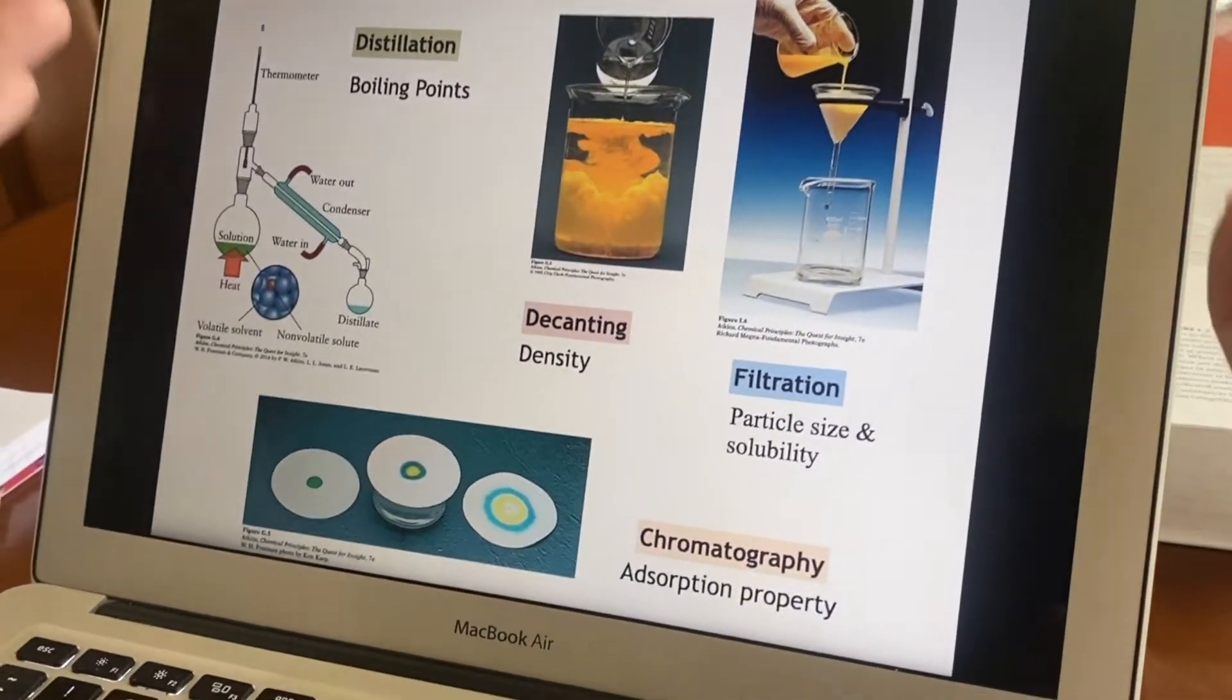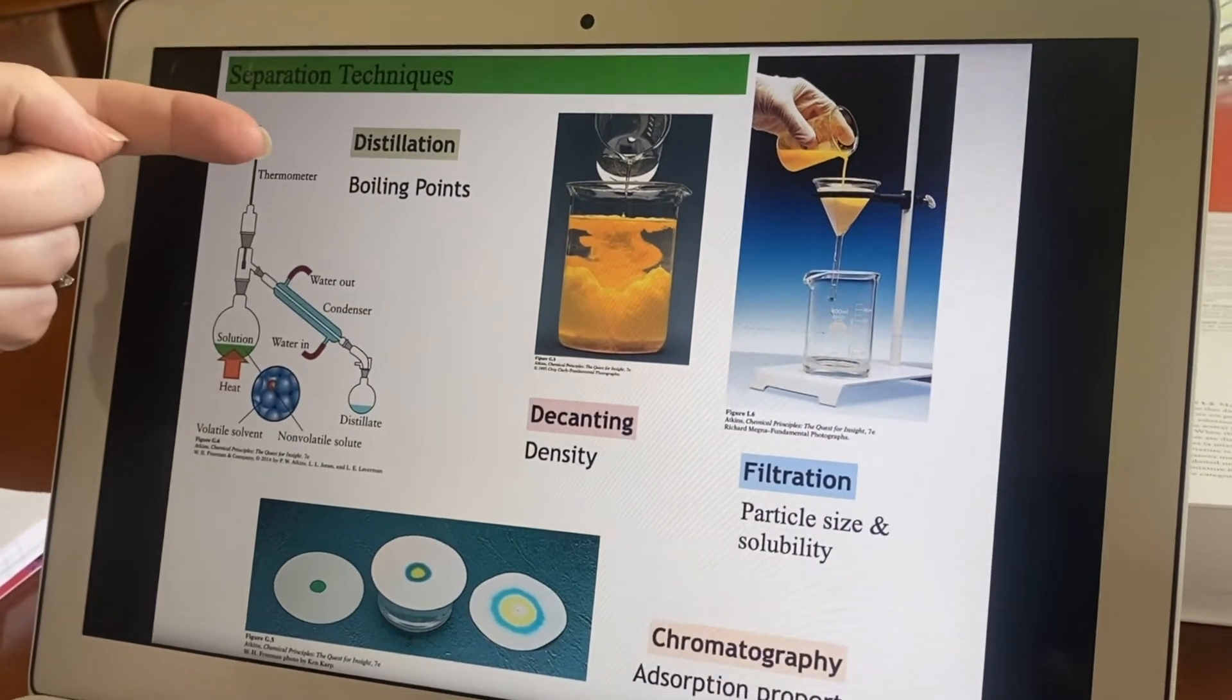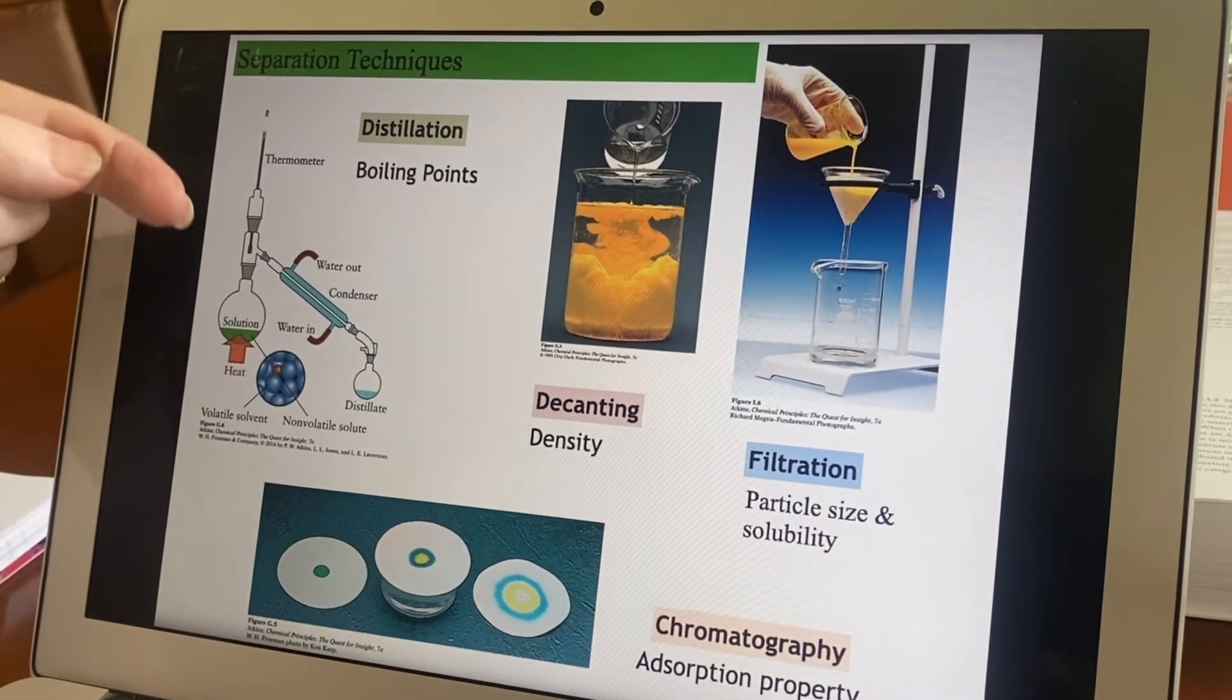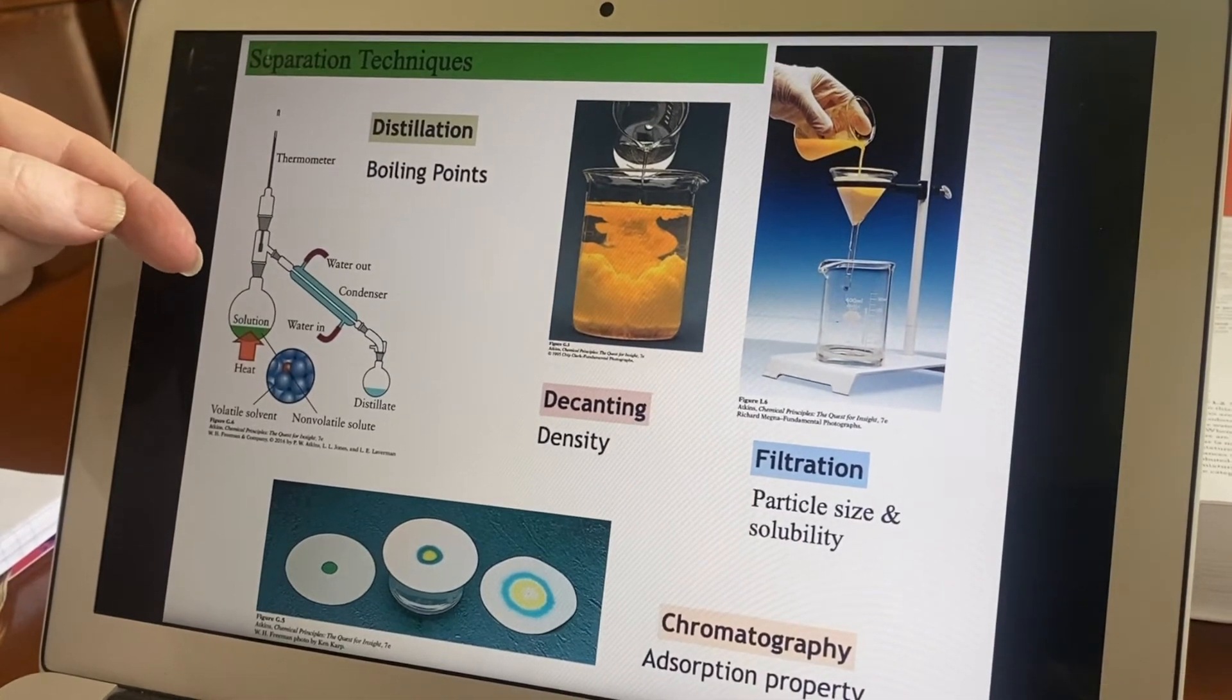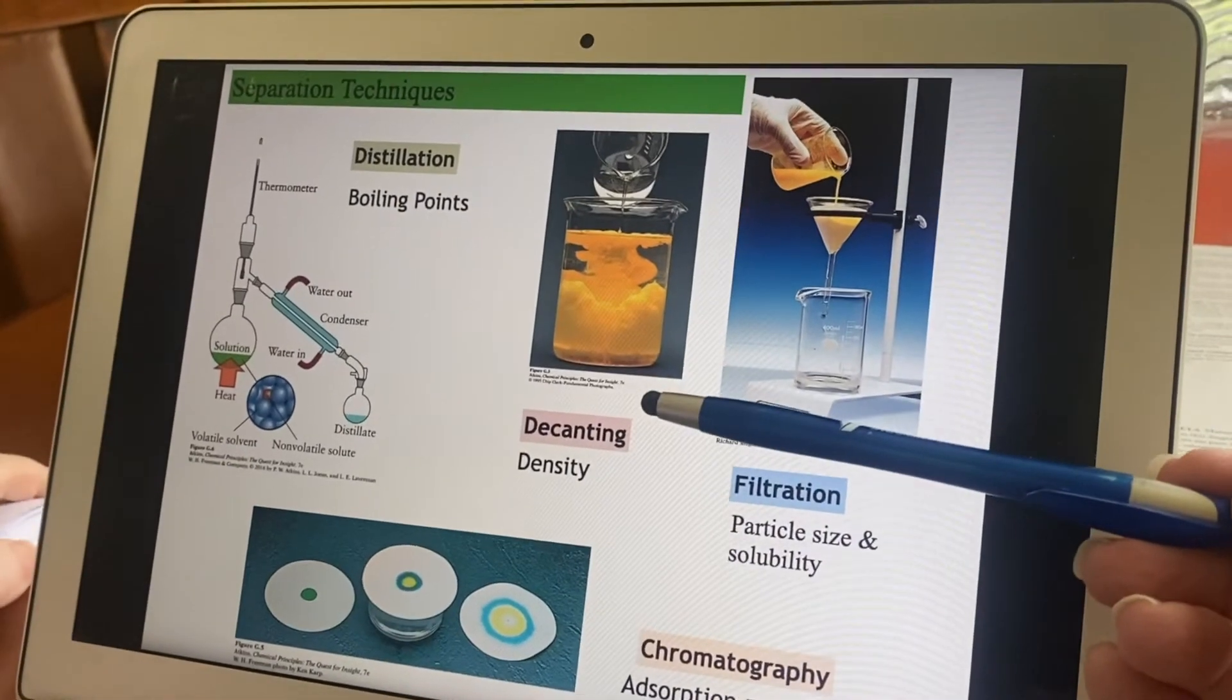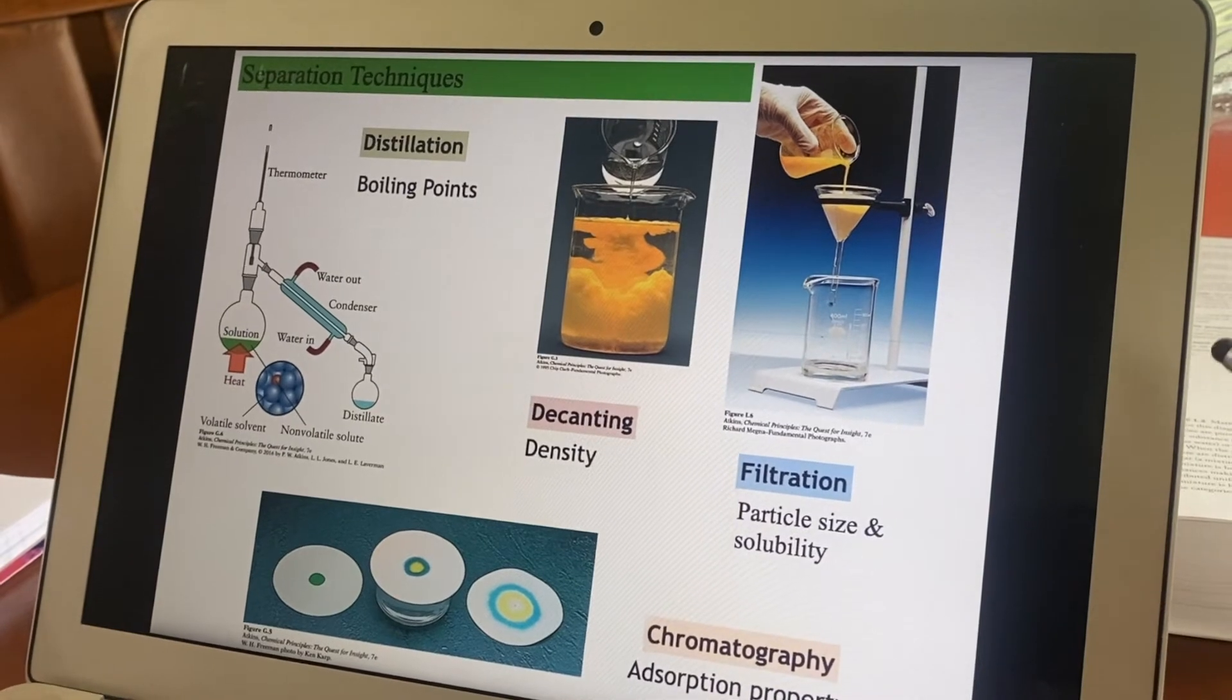So how am I going to do that? Here are a few separation techniques. Distillation will let you separate things based on their boiling points. So you can even separate two different liquids this way because one will have a different boiling point than the other. There's decanting, which uses density. So decanting. You might have heard of a piece of glassware called a decanter.